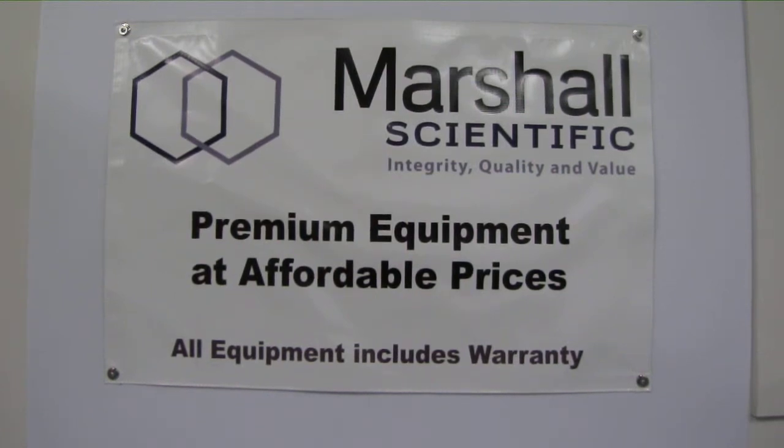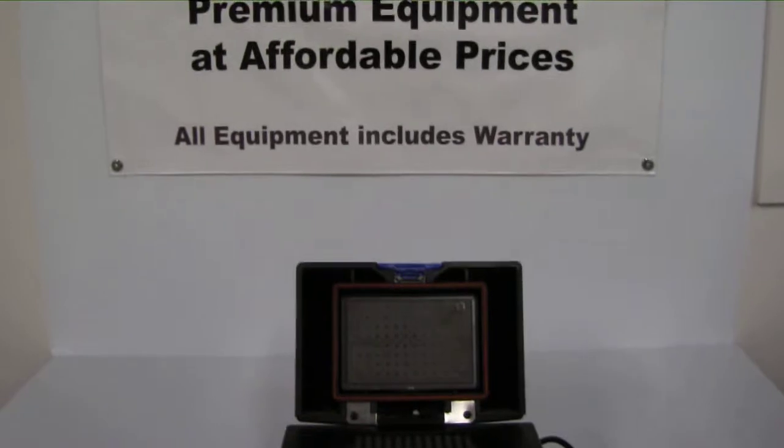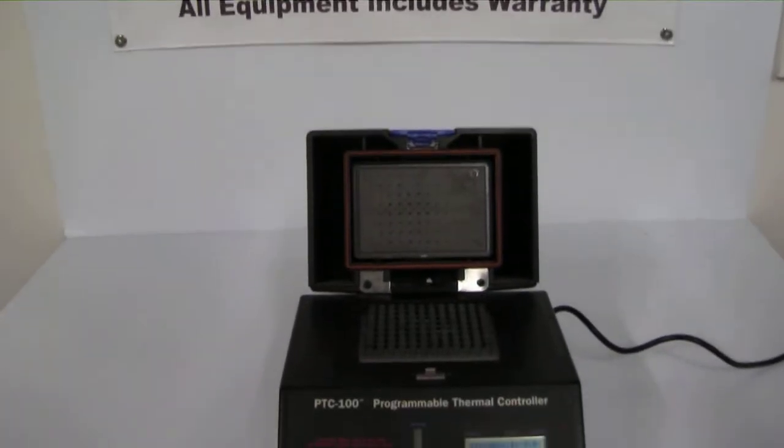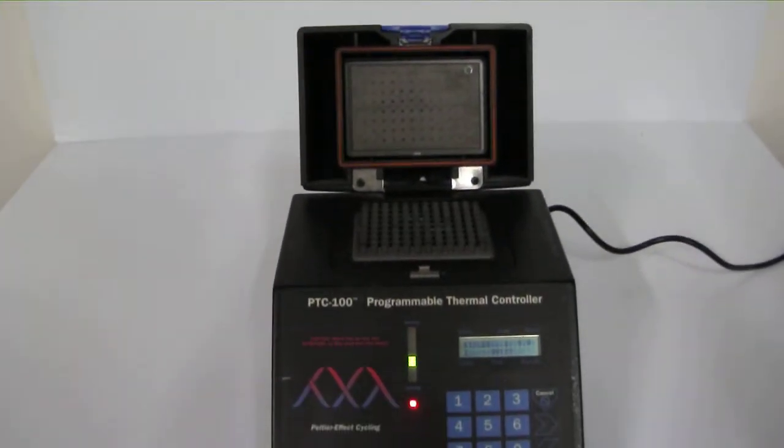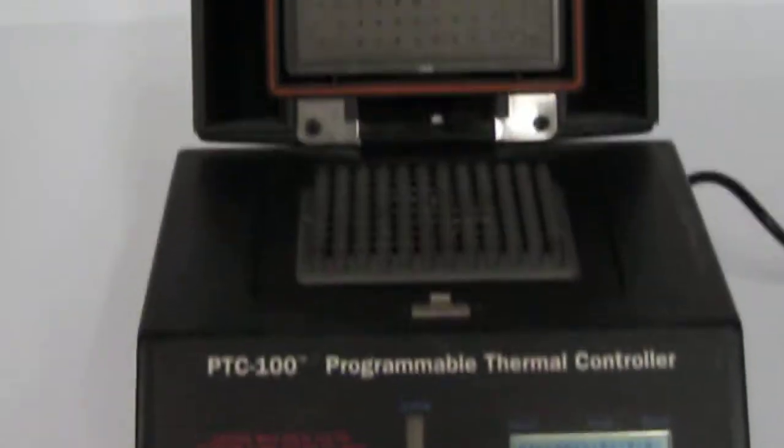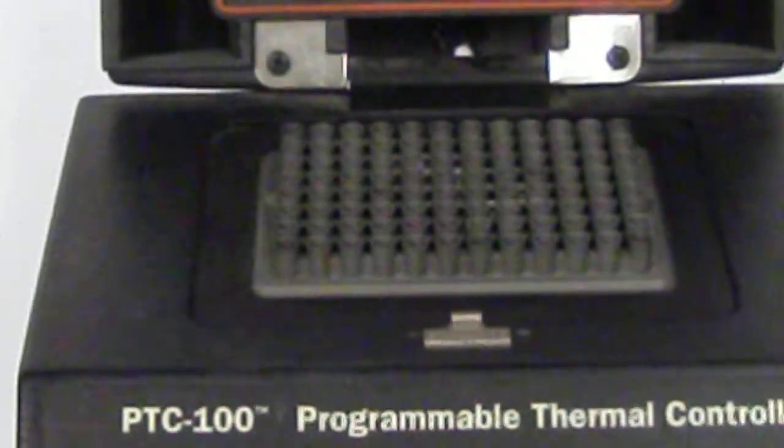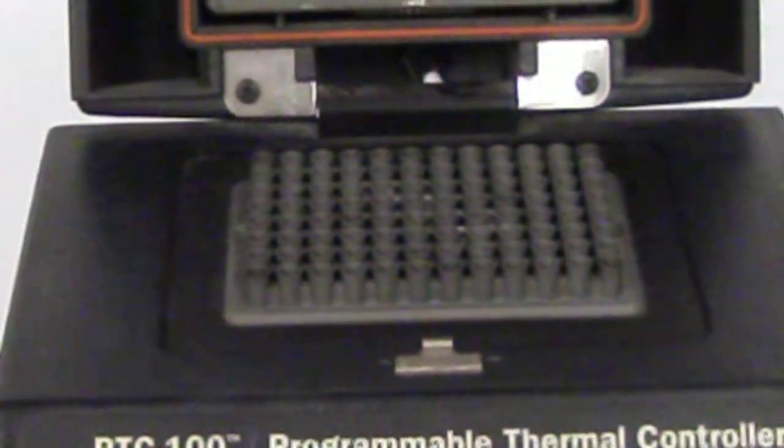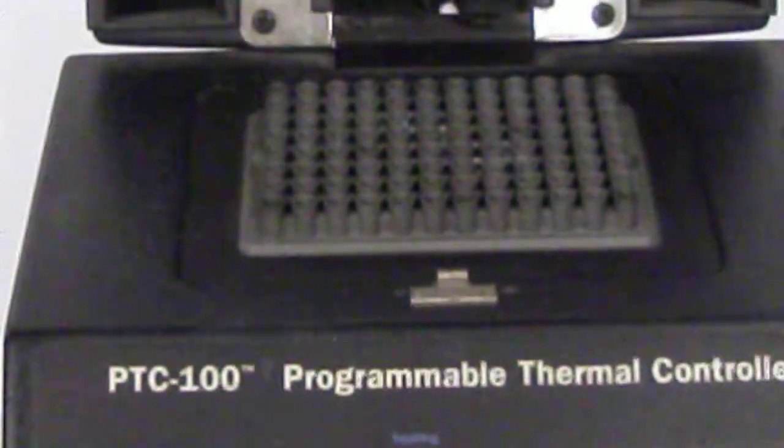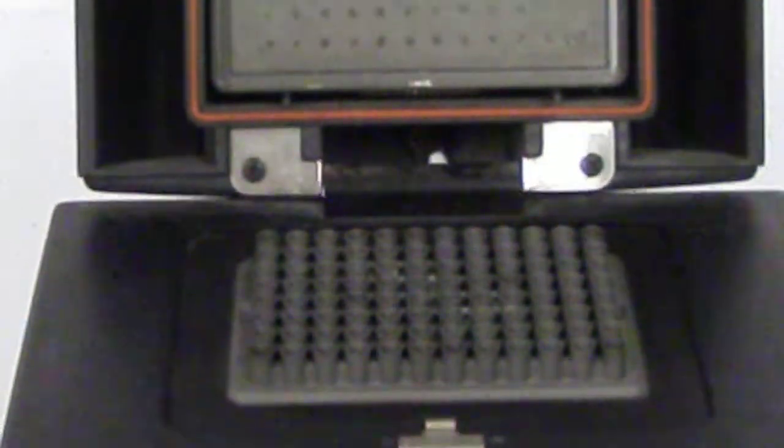This MJ Research PTC100 Thermocycler will meet and exceed your needs for a versatile, reliable, and compact programmable thermal cycler. The MJ Research PTC100 is a 96-well thermocycler that also uses a heated lid for oil-free operation.